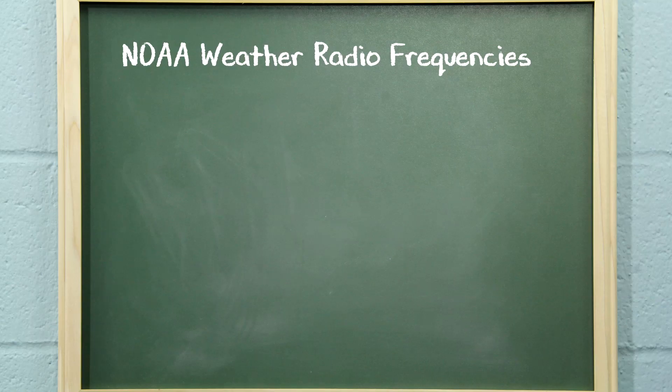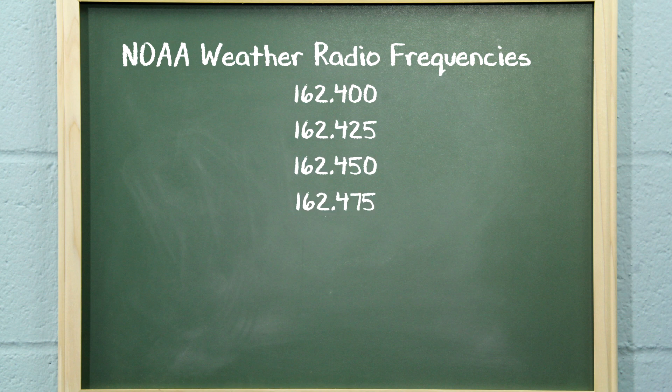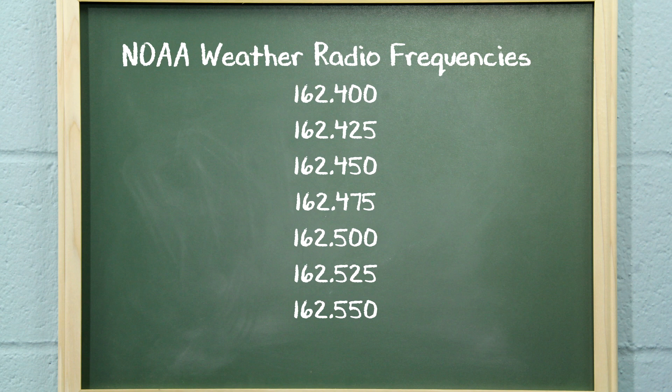But how do you use them? How can you find the correct NOAA weather channel for use in your area? There are seven VHF radio frequencies designed specifically for NOAA weather broadcasts. These frequencies are used by a network of transmitters across the U.S. to broadcast weather information, warnings, and alerts 24 hours a day, 7 days a week.